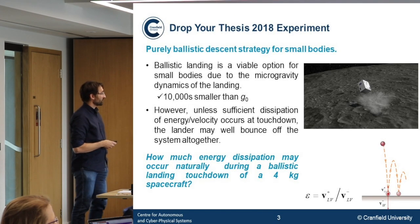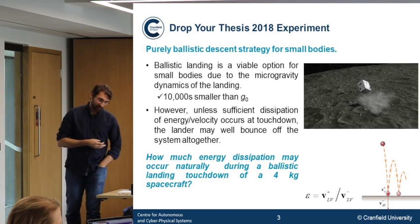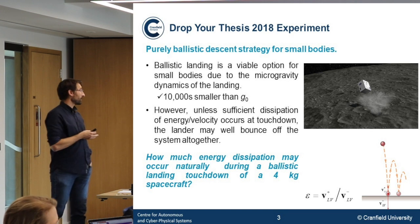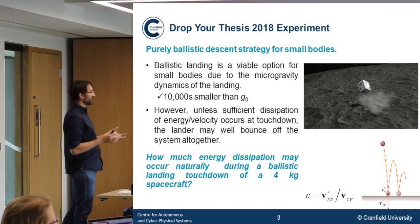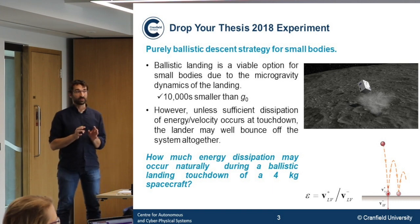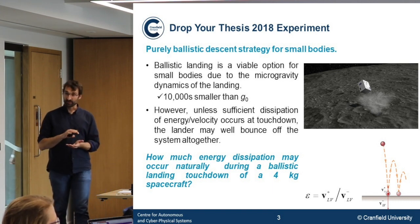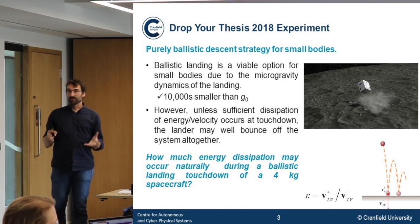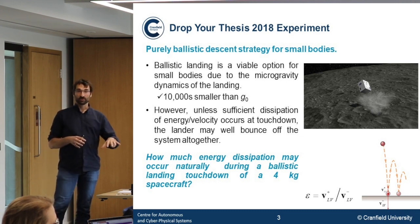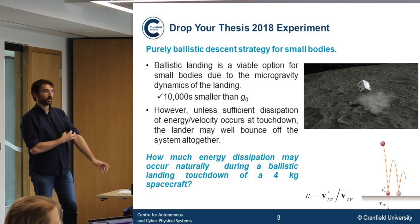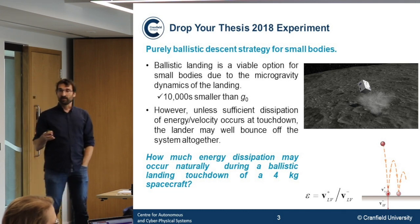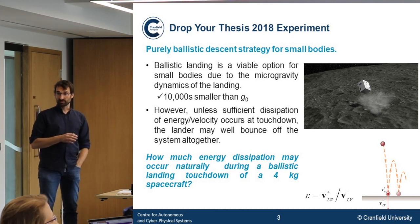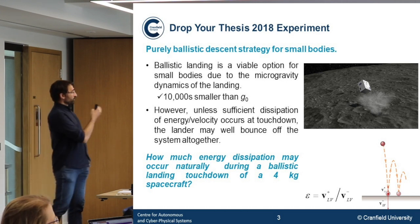The experiment we ran: I've been working for some time on designing trajectories to land on asteroids. Asteroids have a dynamical environment with microgravity — gravity about 10,000 times less than at sea level. This means you don't need a full lander to slow down your fall; you can drop something from very far away and it will touch down on the asteroid at just a few centimeters per second.